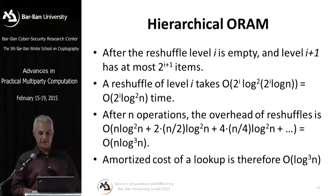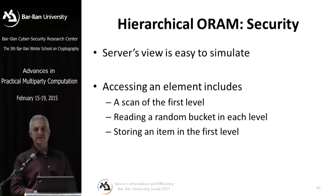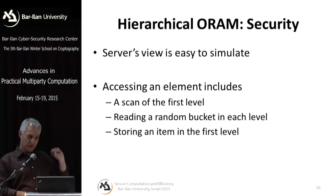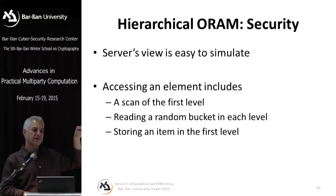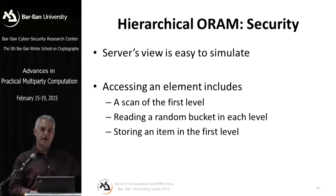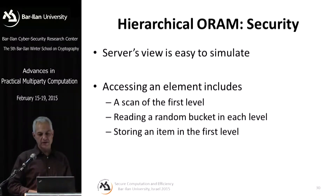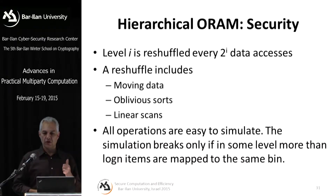What about security? The view of the server is easy to simulate. The client scans the entire first level — always the same. Then it reads a random bucket in each layer. When I described the read process, I said that if the item was already found at one level, you look at random buckets in lower levels rather than the bucket corresponding to the hash of that item. This ensures each read involves accessing random items in each bucket. Then the client stores an item in the first level and does reshuffles involving storing, sorting, and linear scans — all oblivious and easily simulatable. Security breaks only if hashing maps more than log n items to one bin, in which case the system cannot handle the overflow.